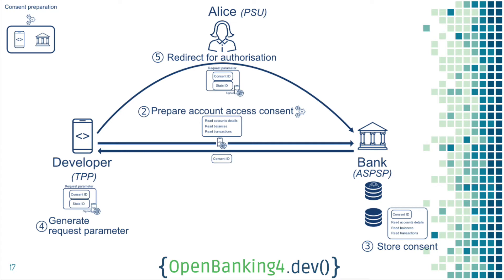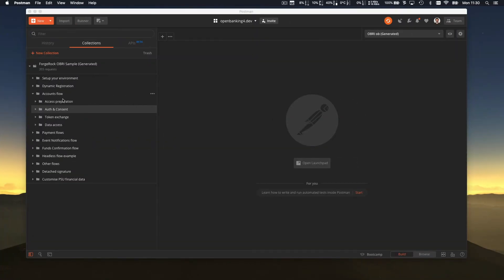What you need to do at this step is create an access consent. As you can see in the middle, there's a fingerprint indicating you need to be authenticated to do that. In Open Banking, this is done using the client credential flow — you get an access token, and that access token is what you use to actually create the consent.